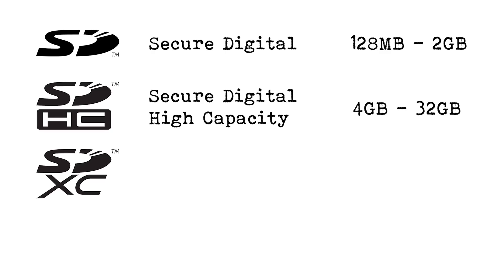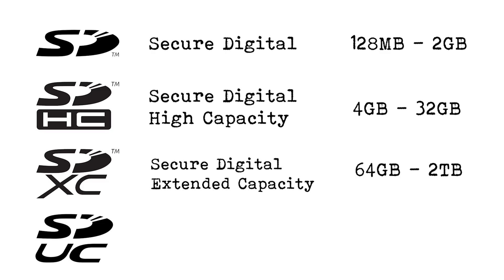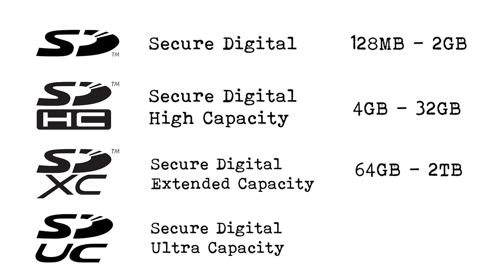Then you have SDXC — secure digital extended capacity — with card capacities of 64 gigabytes to 2 terabytes. And then you have SDUC — secure digital ultra capacity — with card capacities up to 128 terabytes. These are just different names given to SD cards as the capacities have increased, and it probably comes down to a little bit of marketing as well.